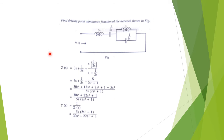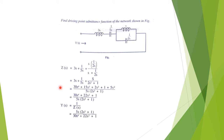For a single-port network, we need to find the driving point admittance function. First, the driving point impedance Z(s) is found as the equivalent impedance viewed from the open-circuit terminals. Two impedances are in parallel (their equivalent equals s · (1/2s) / (s + 1/2s)), and that is in series with 1/(5s) and 3s. Z(s) works out to be (30s⁴ + 22s² + 1) / (2s² + 1). Taking the reciprocal, Y(s) = (2s² + 1) / (30s⁴ + 22s² + 1) times a constant.